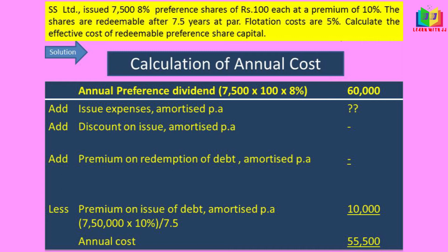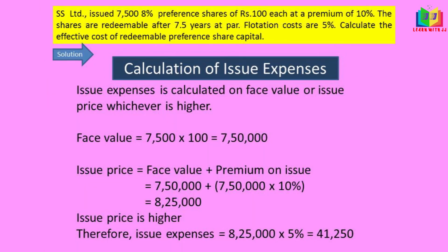Next we have to calculate the issue expenses. Issue expenses is calculated on face value or issue price, whichever is higher. Here the face value is 7,50,000 and the issue price is 8,25,000. The issue price is higher, so we calculate issue expenses on the issue price. The issue expenses percentage is 5%, so 5% on 8,25,000 gives us 41,250.